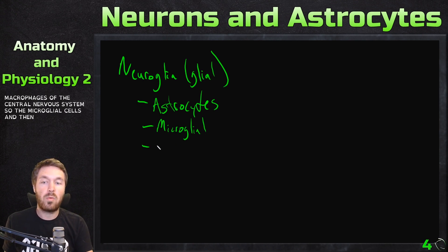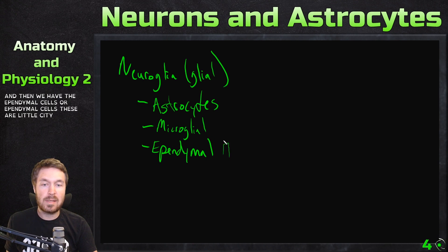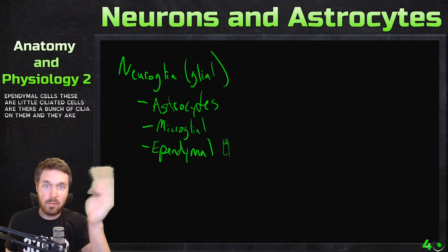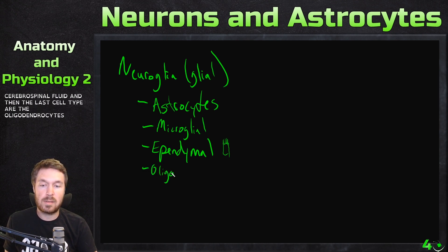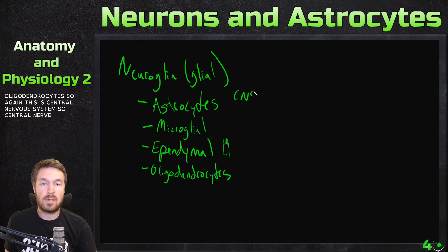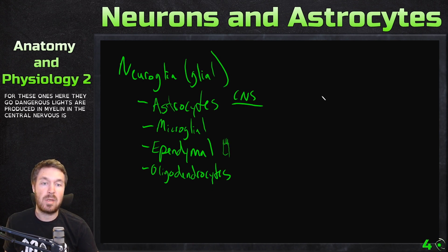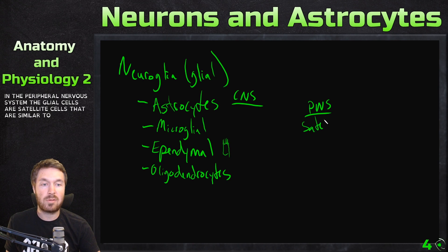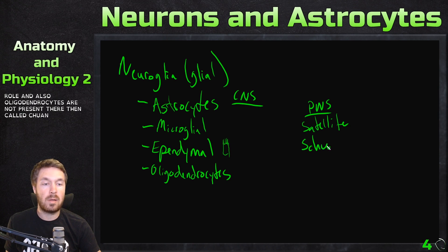So then we have the ependymal cells. These are little ciliated cells — they have a bunch of cilia on them and they are moving around cerebral spinal fluid. And then the last cell type are the oligodendrocytes. This is central nervous system, so oligodendrocytes are producing myelin in the central nervous system. In the peripheral nervous system, the glial cells are satellite cells, similar to astrocytes in a supportive role. And oligodendrocytes are not present there — they're then called Schwann cells.